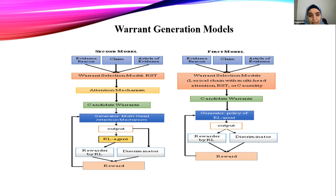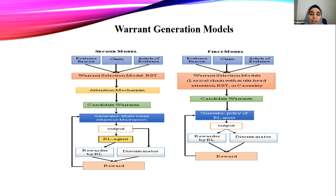The second model differs from the first in that instead of using the reinforcement learning agent as the generator, we use multi-head attention as the generator, but enhance the model with reinforcement learning. So in the first model, the RL agent acts as the generator, but in the second model, the RL agent acts as an enhancer to improve the performance of the generation.